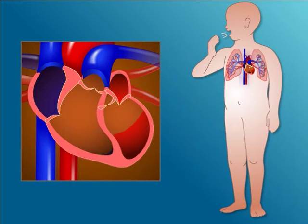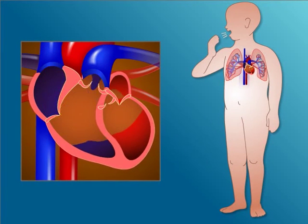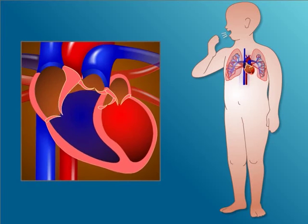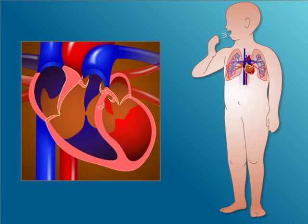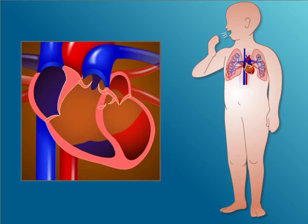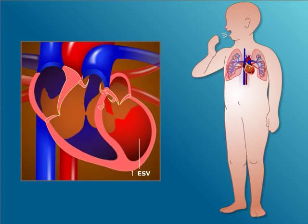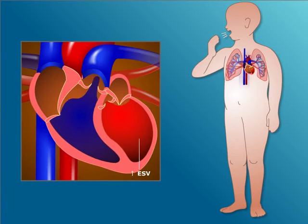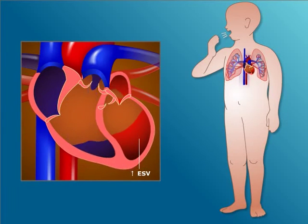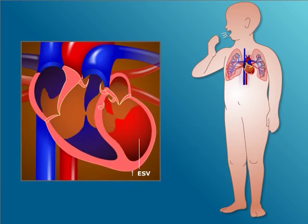On auscultation, there will be rales and an S3 gallop due to fluid overload, illustrated here as an increase in end systolic volume in the left ventricle. To reduce fluid overload, loop diuretics can be used in the treatment of CHF.